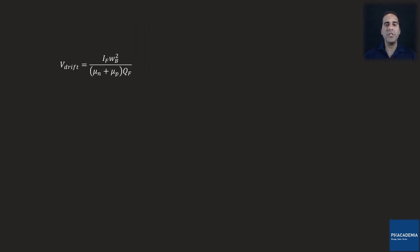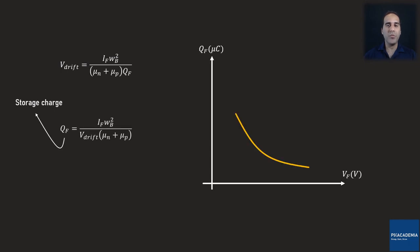The drift voltage equation of the PIN diode is a function of the forward current, base width, mobility of charge carriers, and the storage charge. By manipulating this equation, we can compute the storage charge. Plotting storage charge versus forward voltage shows a curve demonstrating the reduction of storage charge as the forward voltage increases. Since the drift voltage is proportional to the forward current, a higher forward current — and therefore higher forward voltage — reduces the PIN diode storage charge. This is very good news, as it causes less reverse recovery.